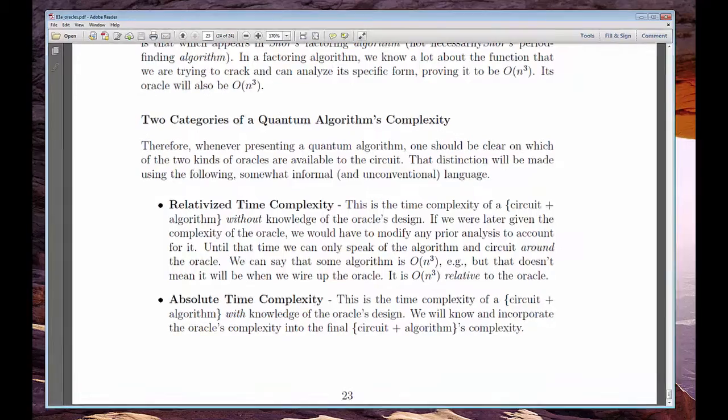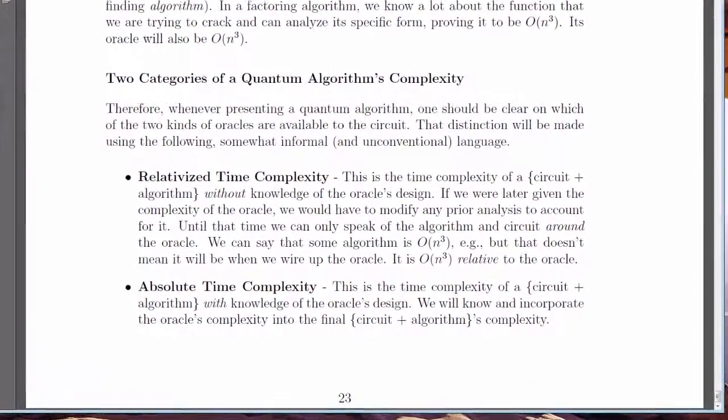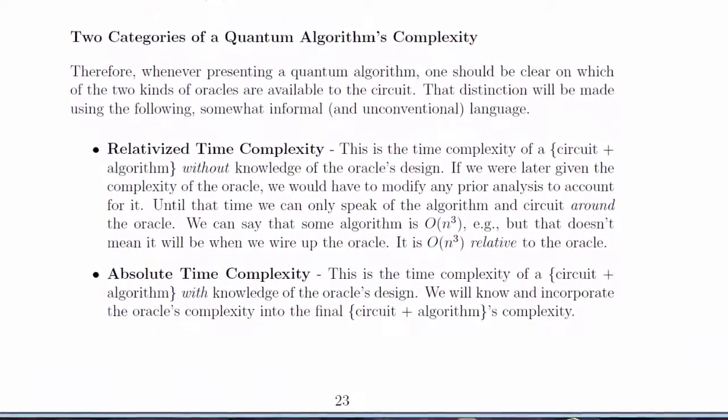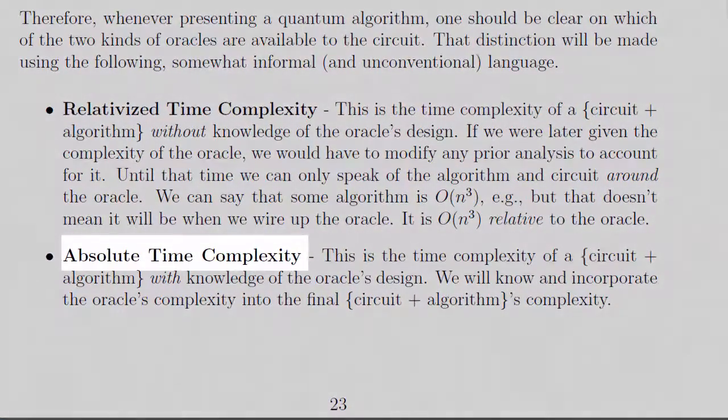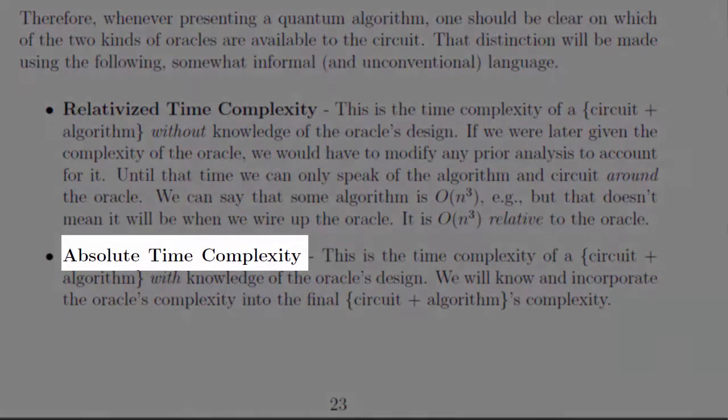On the other hand, if we happen to know the complexity of the function and its oracle, then we do have complete knowledge of the whole enchilada. Our big O is going to be accurate for that particular function. In that case, we can make hard claims about the growth rates, and when we get speedup, it's called absolute speedup over the classical.